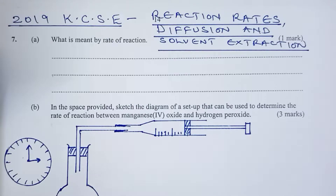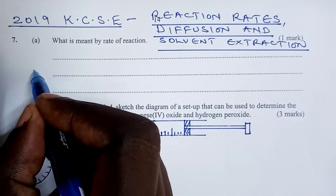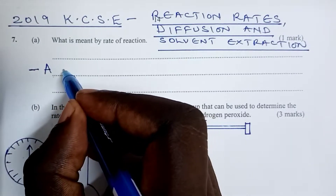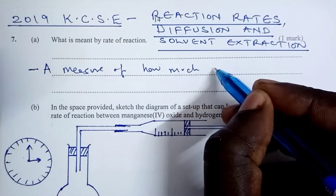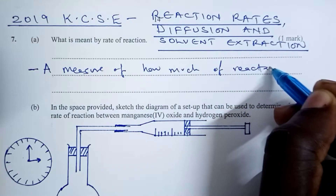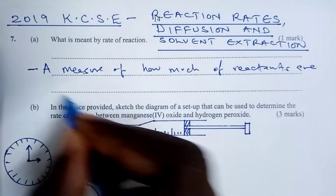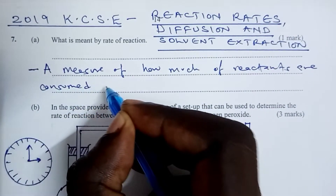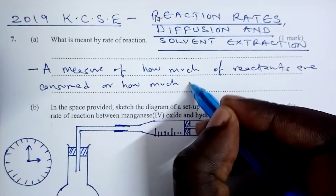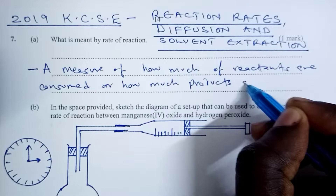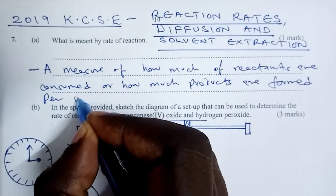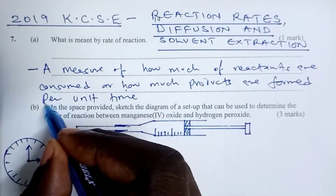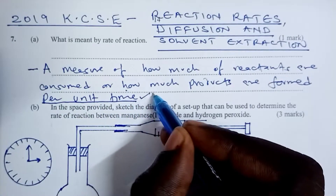First question: what is meant by rate of a reaction? Rate of a reaction is simply a measure of how much of the reactants are consumed, or how much products are formed per unit time. The marking point here is 'per unit time' for the one mark.